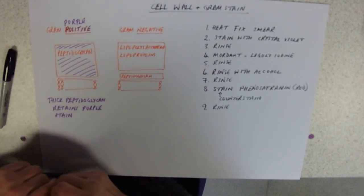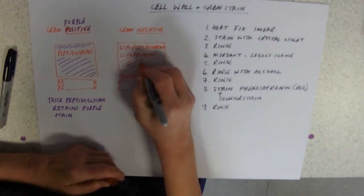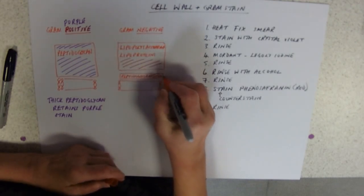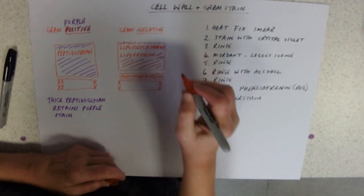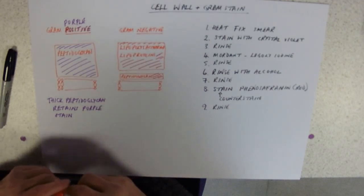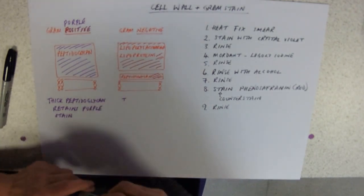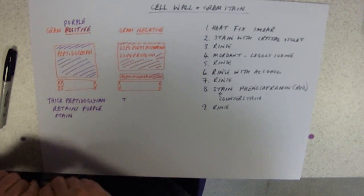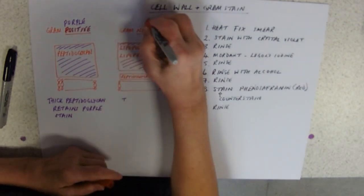And what happens with the counter stain is that those gram negative bacteria are going to retain—they're going to be counter stained red. So why are they counter stained red? These are going to be red.